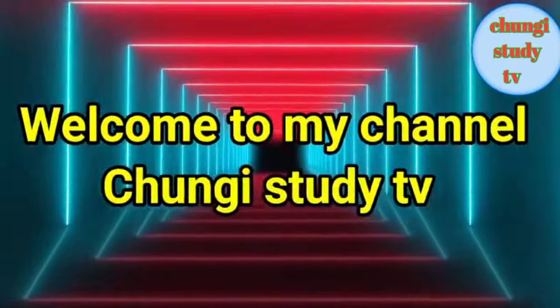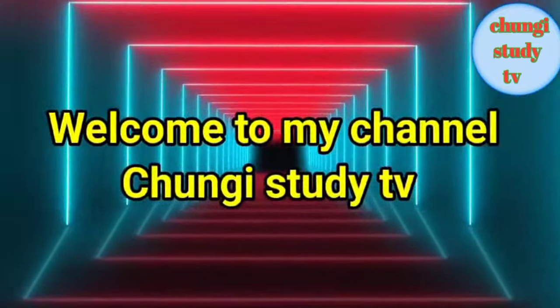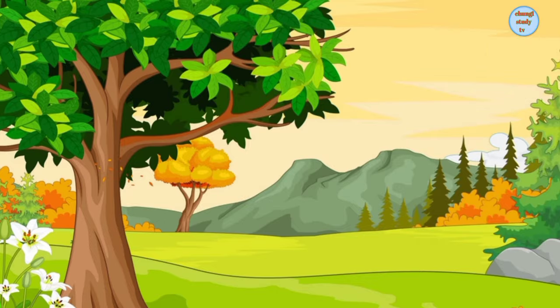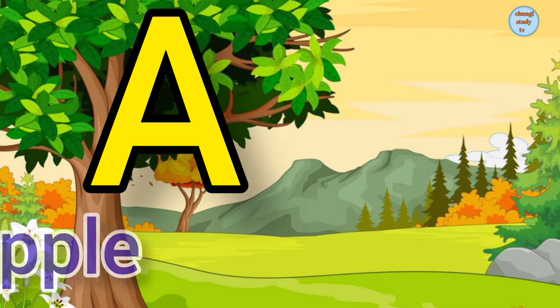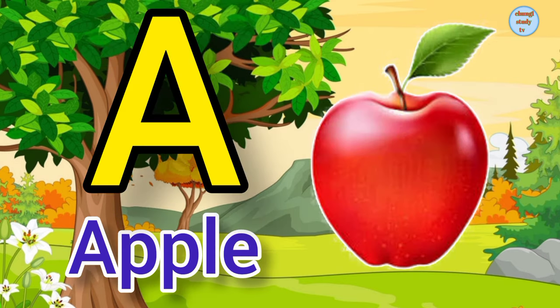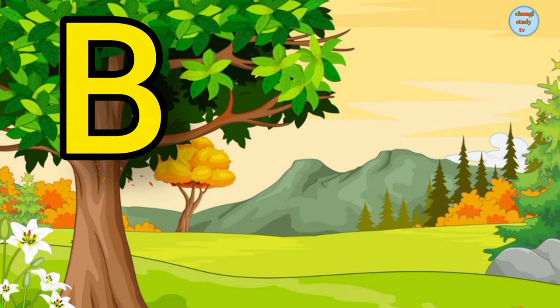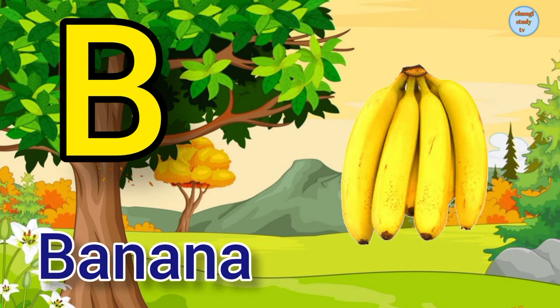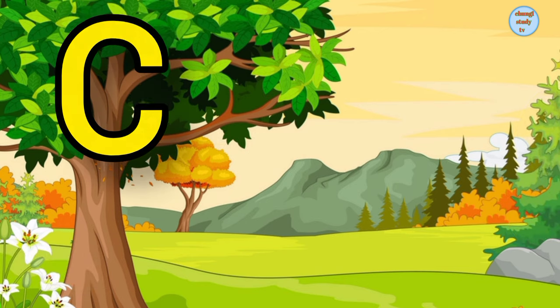Welcome to my channel, Chungi Study TV. A. A for apple, apple means seb. B. B for banana, banana means kela.